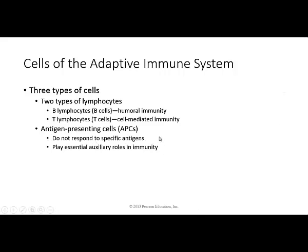When we talk about the adaptive system and its two branches, there's another player: the antigen-presenting cells. These cells are found in the plasma, and their job is to present antigen to B cells and T cells so they can take over and perform their role. So the adaptive immune system is not only targeting free-floating antigens — there are also cells involved that will present the antigen and stimulate the humoral or cell-mediated response.